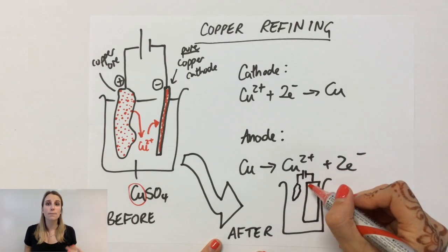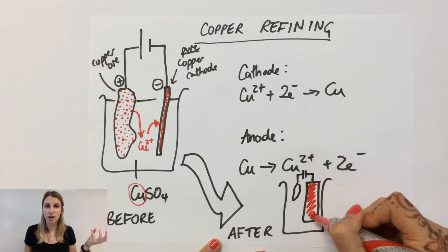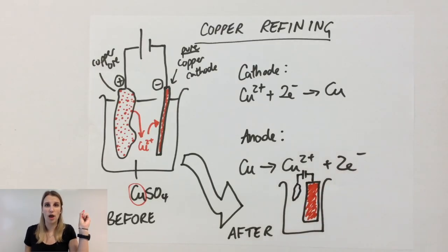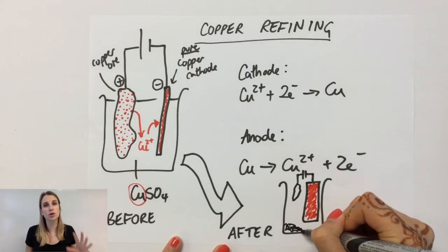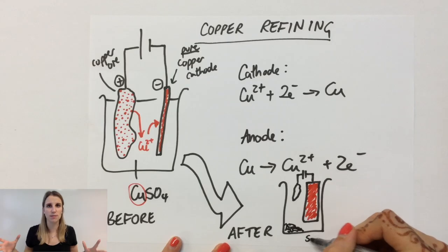Whereas my copper ore anode will get smaller and smaller, and what will end up happening is all the sand and other stuff in the rock will just fall to the bottom like a sludge.